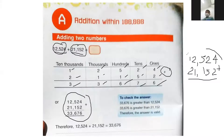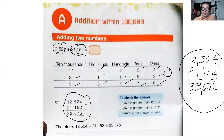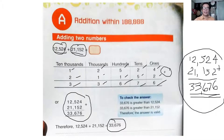So the answer is thirty-three thousand, six hundred and seventy-six. That's how to add two numbers without grouping. Who understands how to add? I want to see your raising hand — who understood?